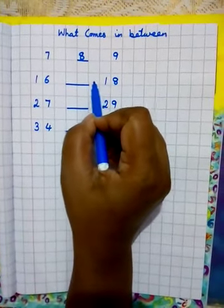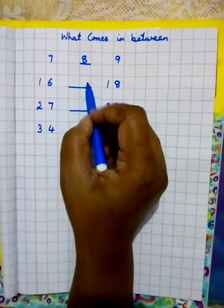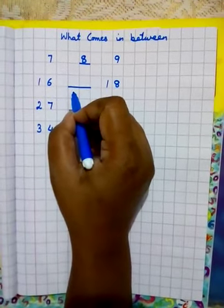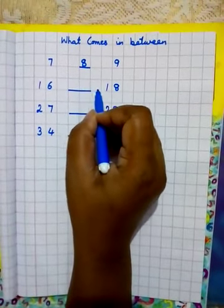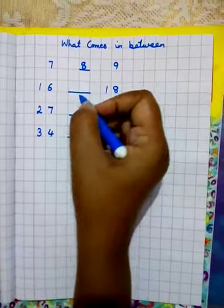Next numbers are 16 and 18. What comes after 16? 17. And what comes before 18? 17.